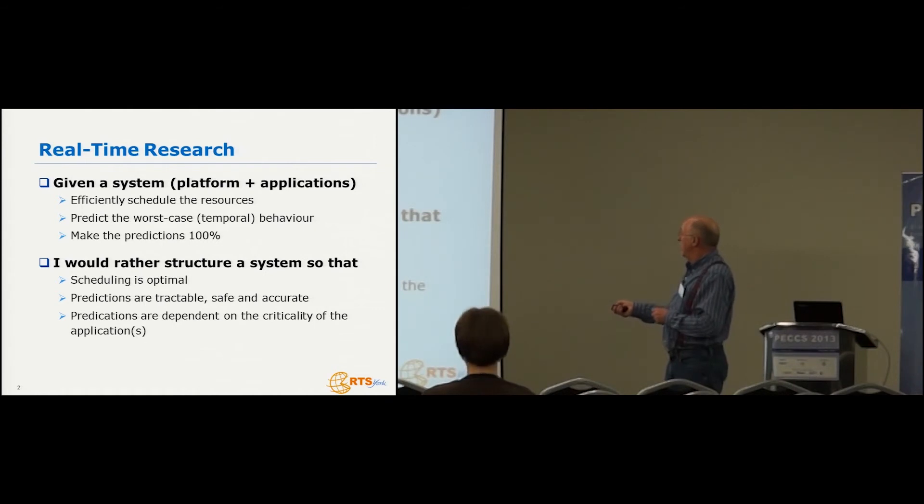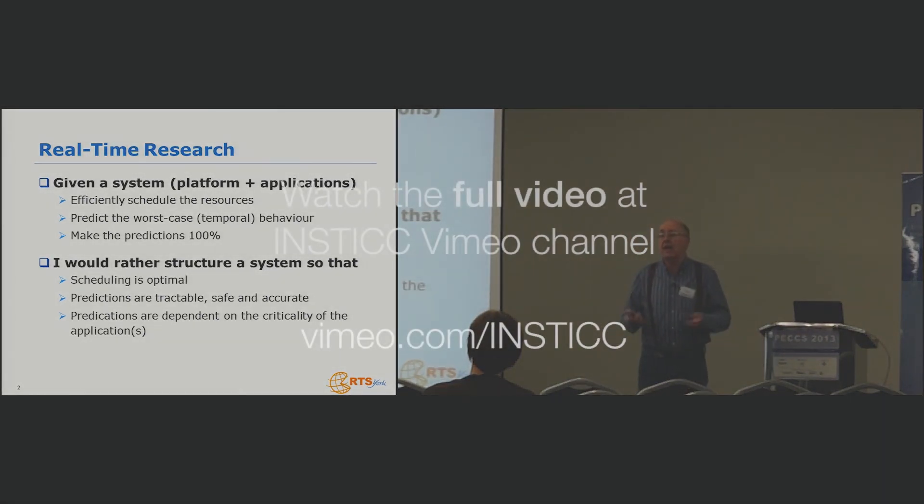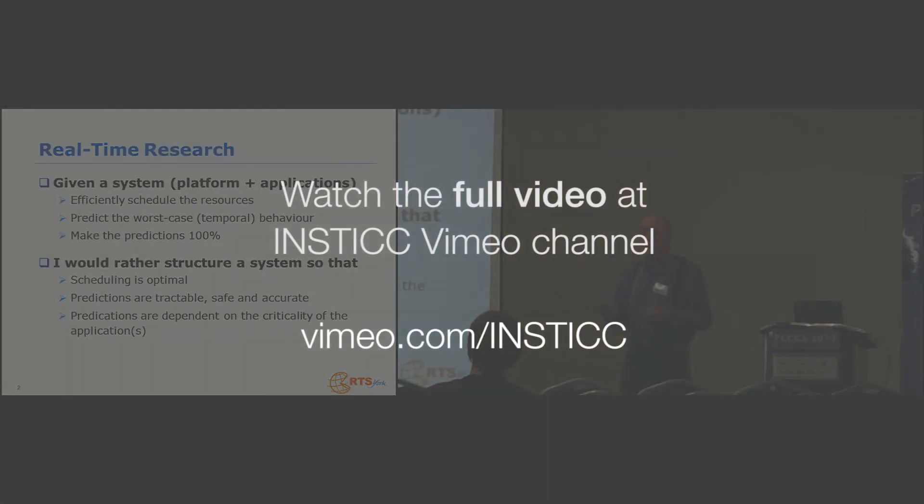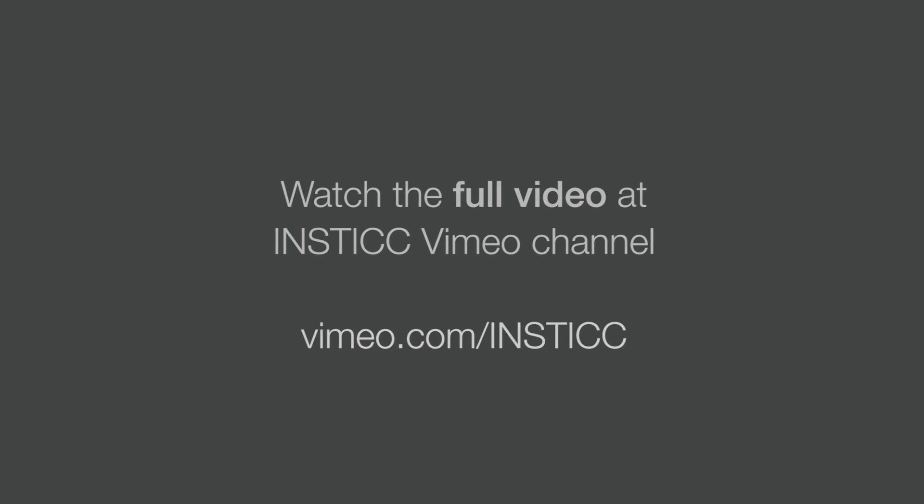So what I'd rather like to do is actually myself have some control over the structure of the systems, platform and applications, so that I can fairly easily get to optimal scheduling, produce predictions that are tractable, safe and accurate, and I can admit and actually exploit the fact that predictions are dependent on the criticality of the component, the criticality of the system or subsystems. So they're not absolute. I'm taking the opportunity in this keynote to address more the bottom end here, the context.